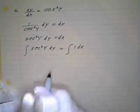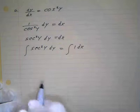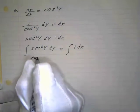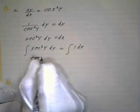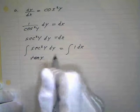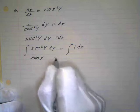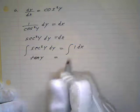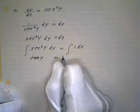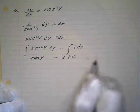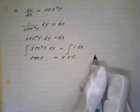The antiderivative of secant squared is just tangent, so it's going to be tangent of y equals x plus c.